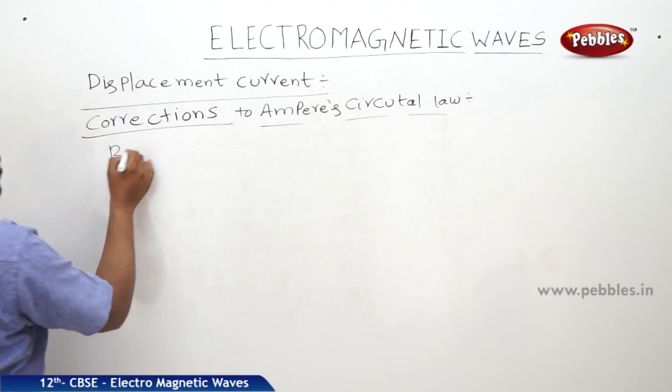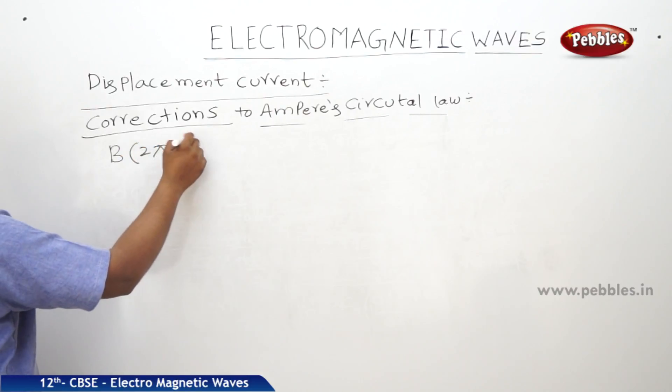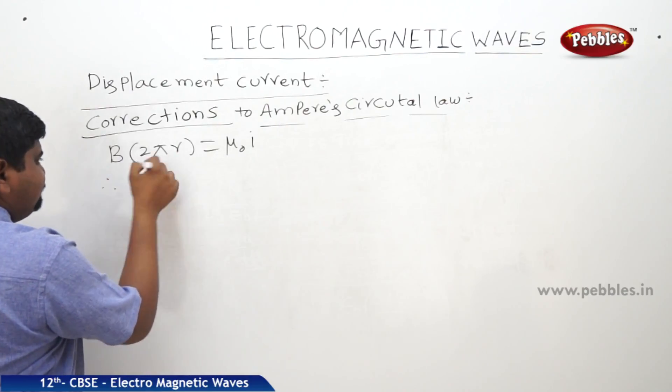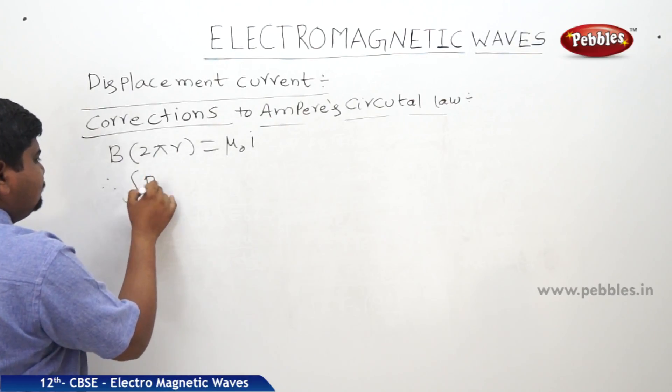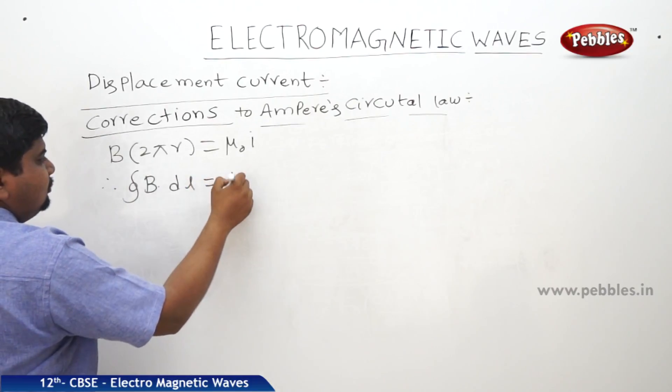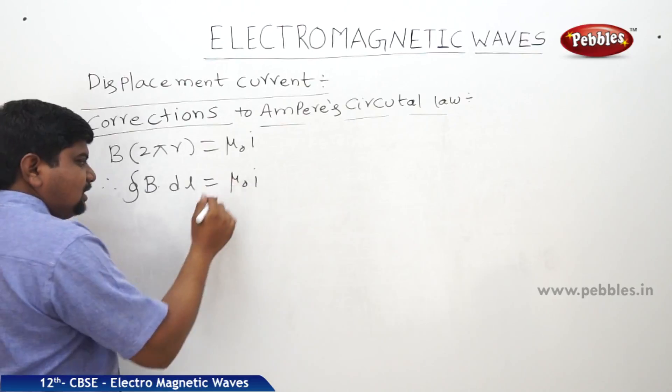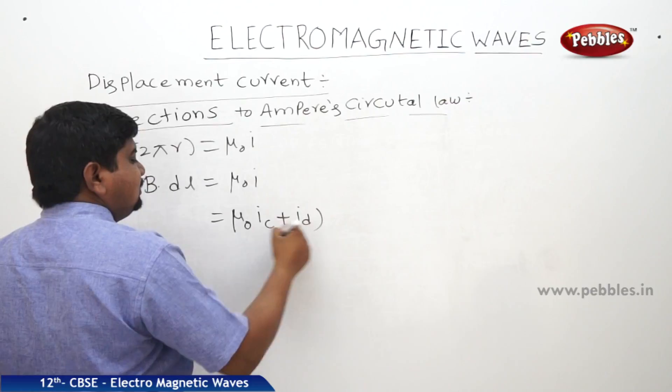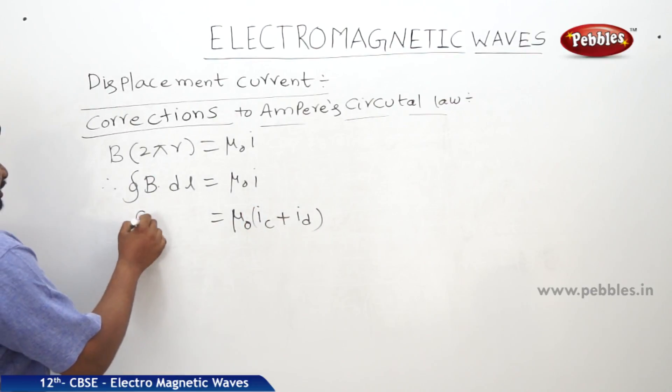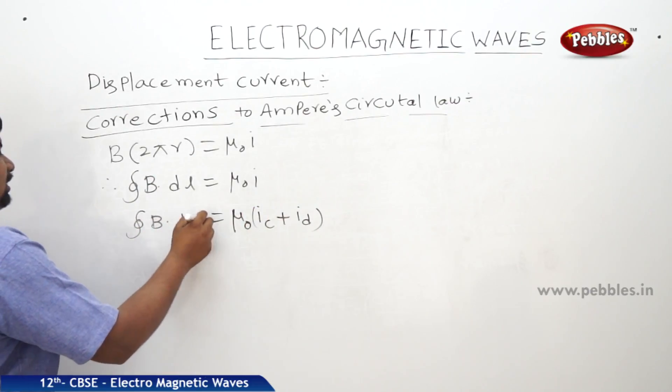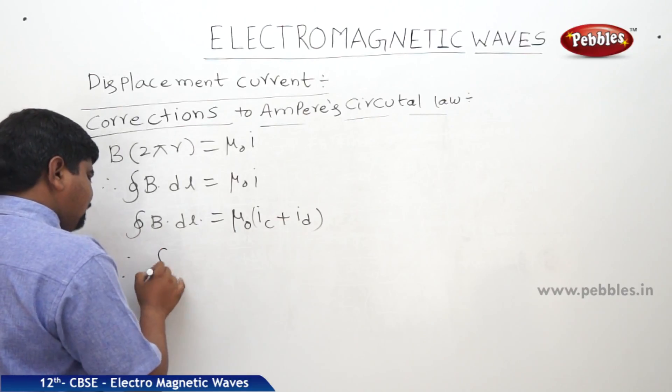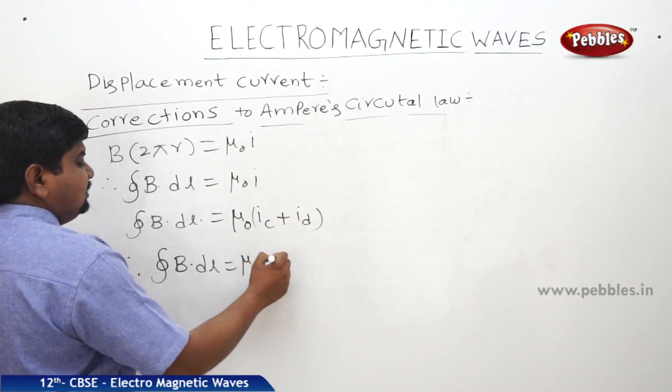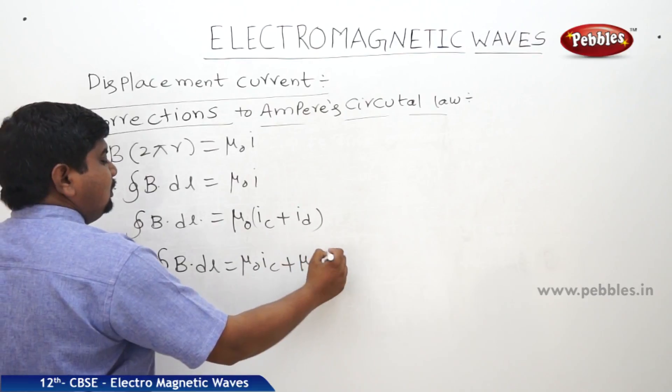So, we know that B into 2 pi R is equal to mu naught I. If you integrate B into DL is equal to mu naught I. This I we can write as IC plus ID is equal to integral B dot DL. Therefore, what is the modification form, modified form? B dot DL is equal to mu naught IC plus mu naught ID.